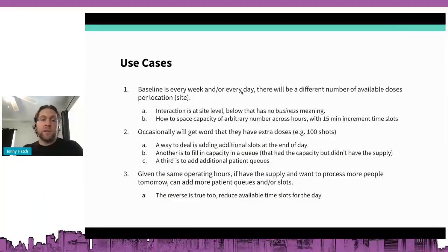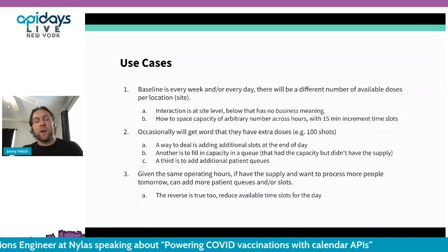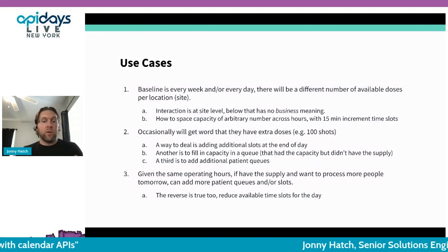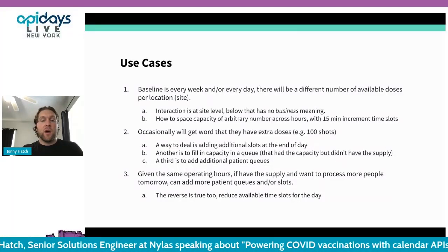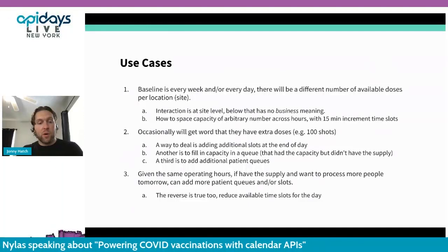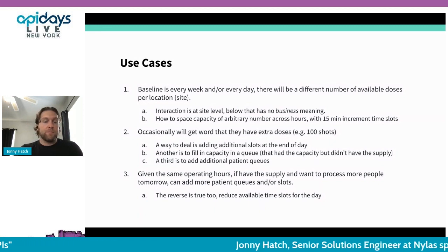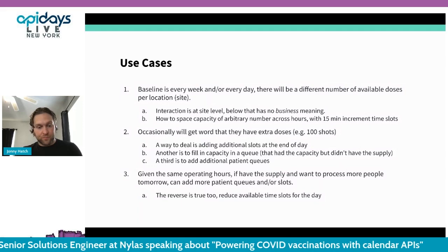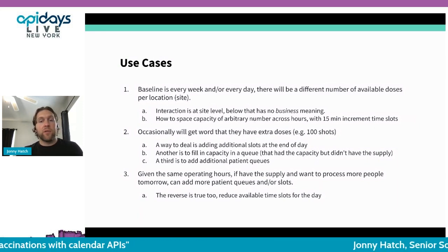Some additional use cases required tracking baselines — for example, if they had 100 doses on a Monday, they might get extra doses or have doses that didn't get distributed because of canceled appointments. They would need to add capacity for things like that dynamically and with short notice. Within their operating hours, they could increase or decrease open hours, or add more slots within the existing open hours they had.